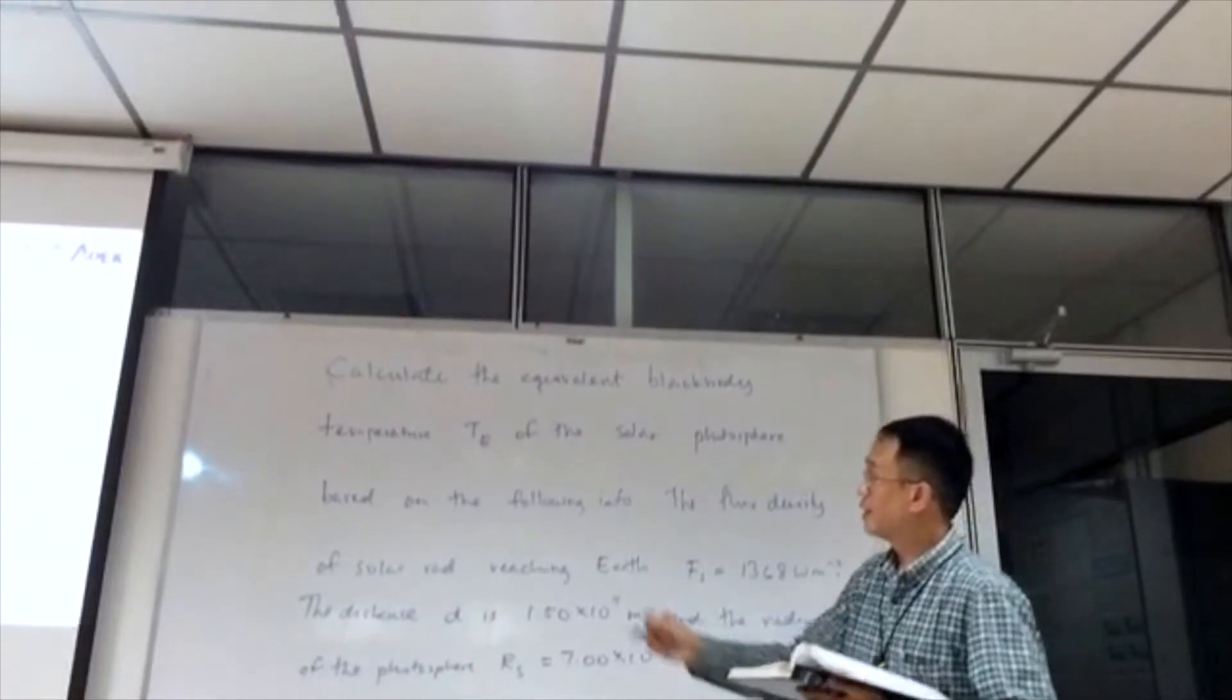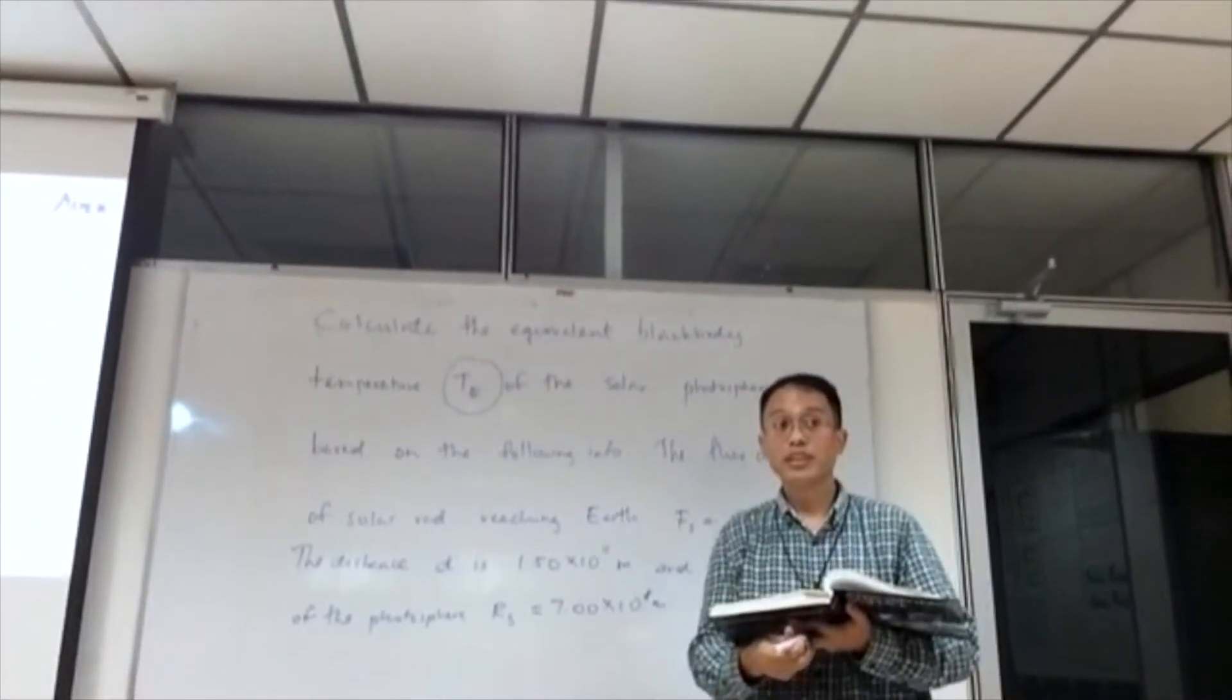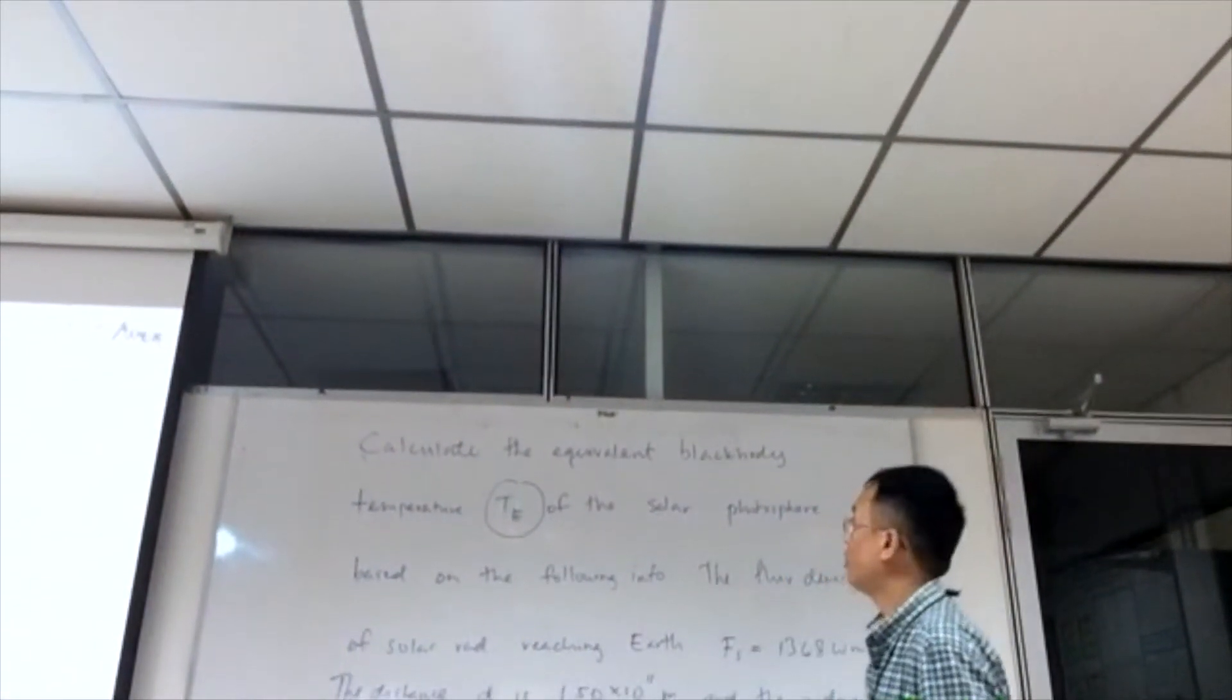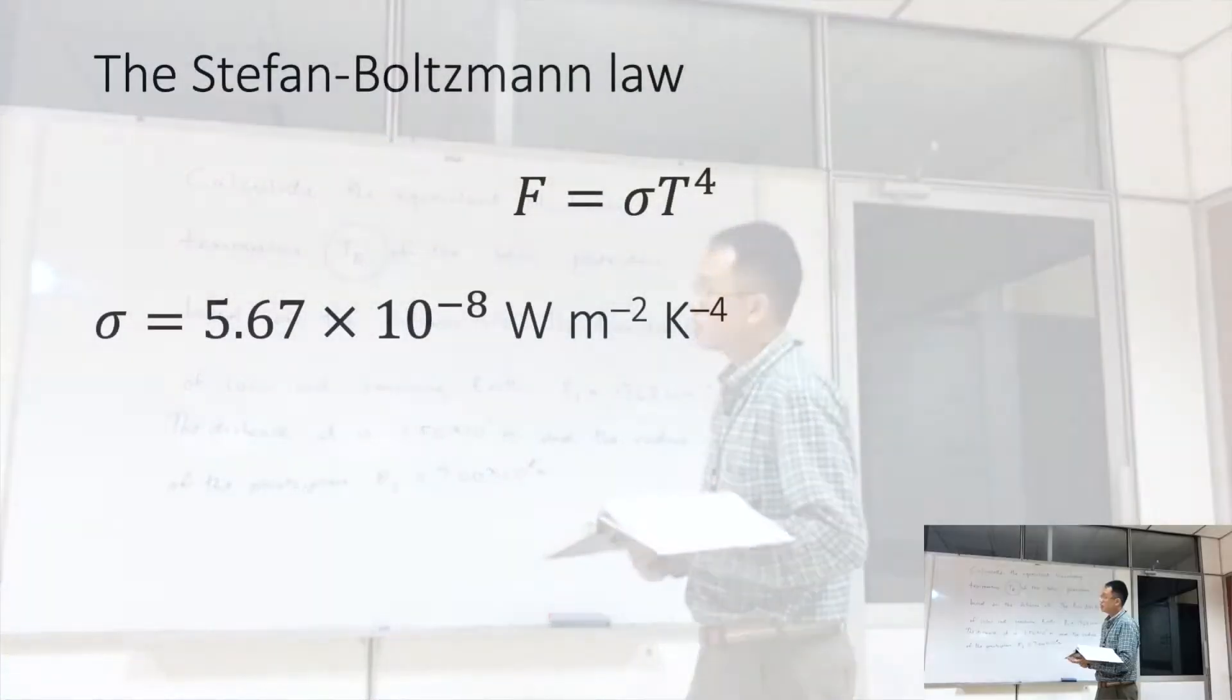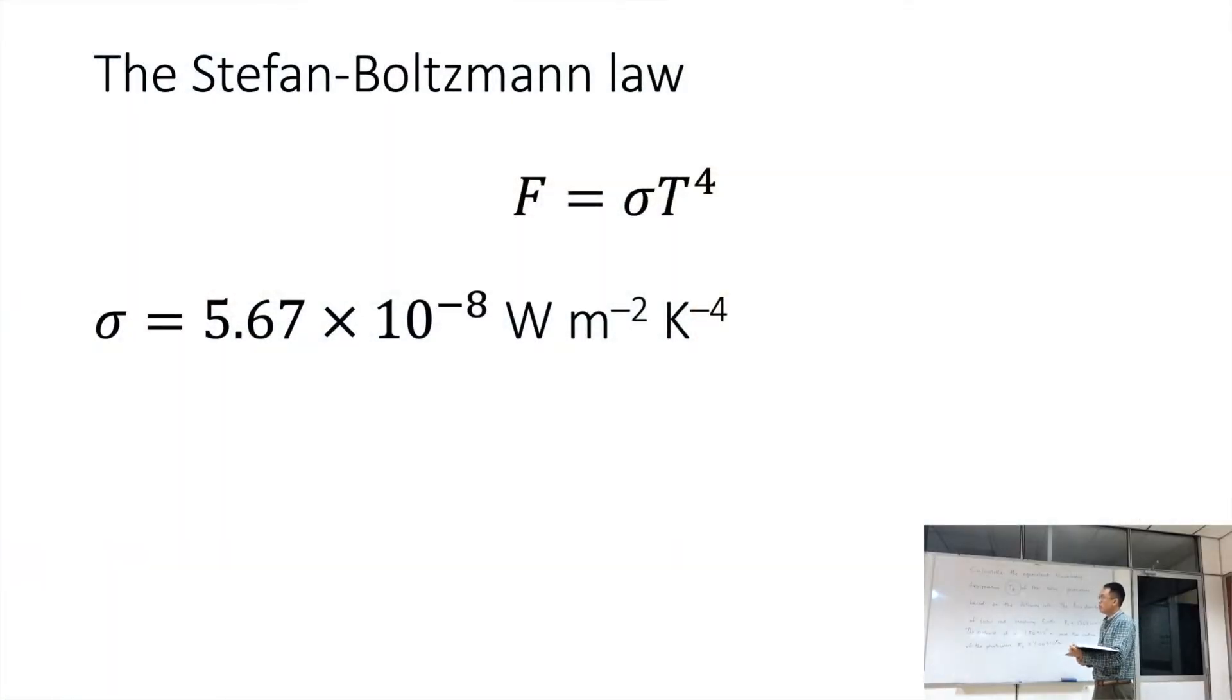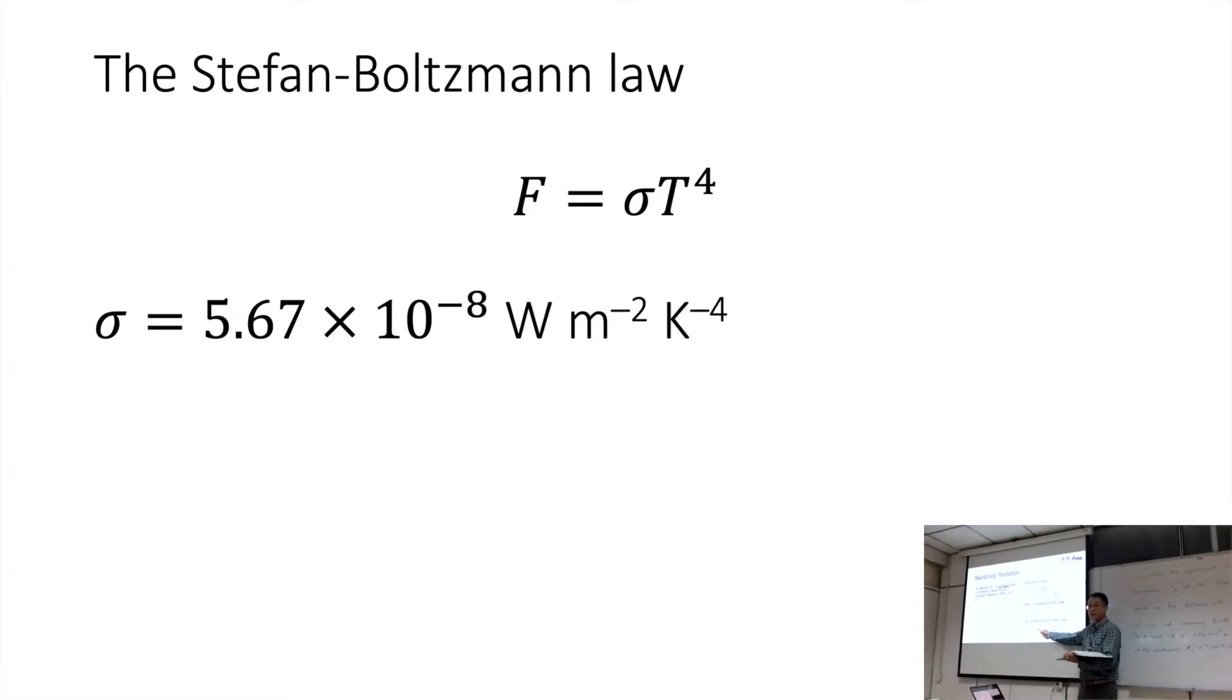So calculate Te, the blackbody temperature or the blackbody equivalent temperature of the solar photosphere from this information. Now the hint is we need to use the Stefan-Boltzmann law, F equals sigma T to the power of 4. Using this equation, we want to calculate T, the blackbody equivalent temperature. So we have F and definitely we have sigma, but then there's a few other information here that we need to use as well.